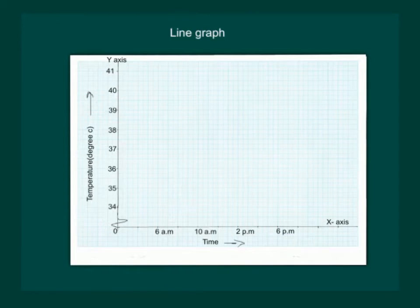Also mark a jagged line on the y-axis as we are not marking temperatures from 0 to 34 and straight away we are taking 34 degrees Celsius. Now we start with plotting of the data.